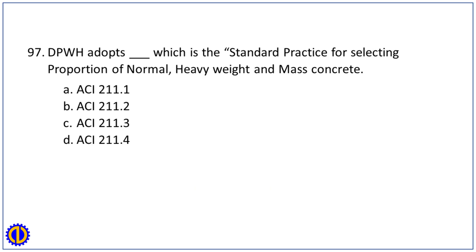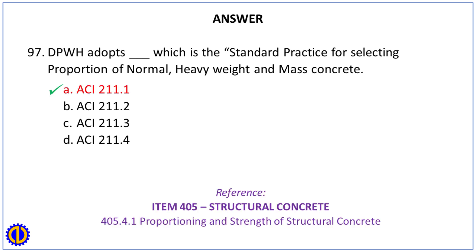Question 97. DPWH adopts blank, which is the standard practice for selecting proportions of normal, heavyweight, and mass concrete. A. ACI 211.1. B. ACI 211.2. C. ACI 211.3. D. ACI 211.4. Answer: A. ACI 211.1. Reference: Item 405, Structural Concrete, 405.4.1 Proportioning in strength of structural concrete.